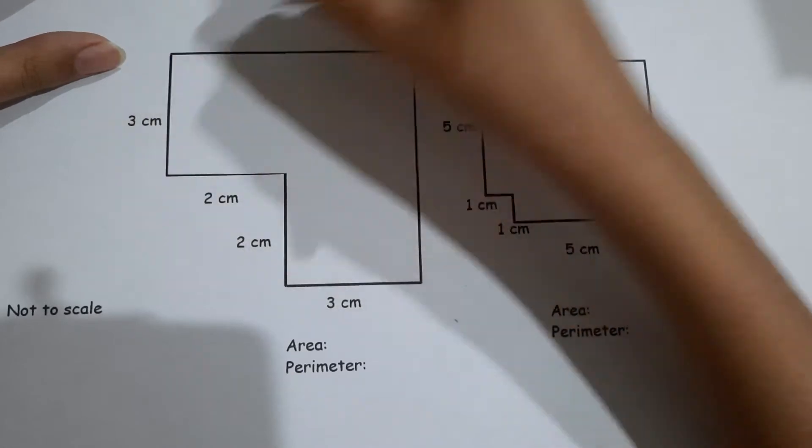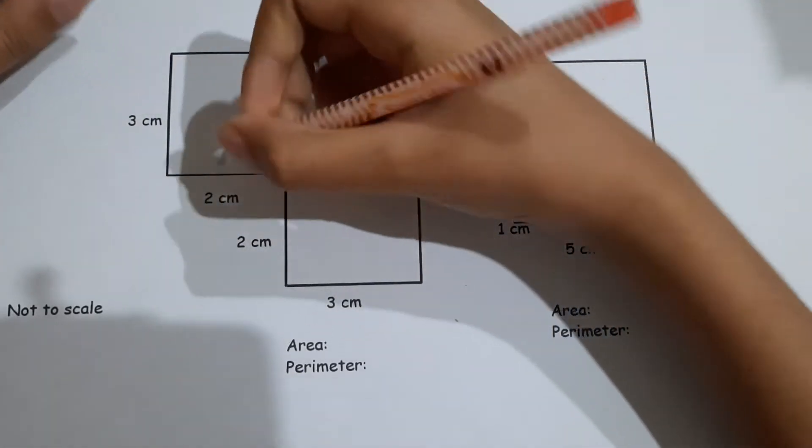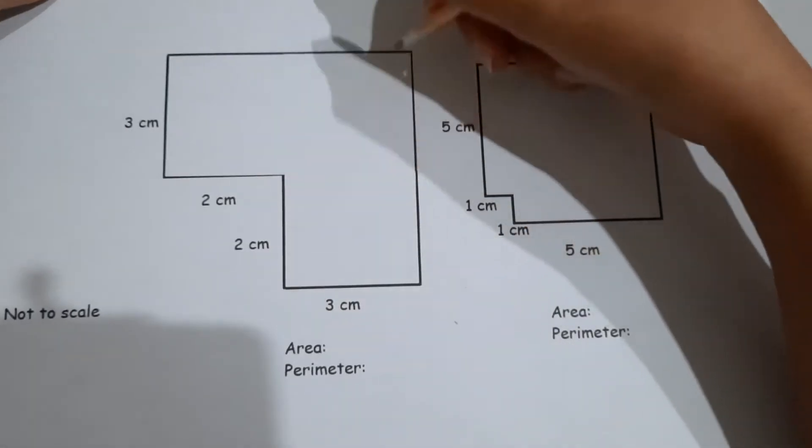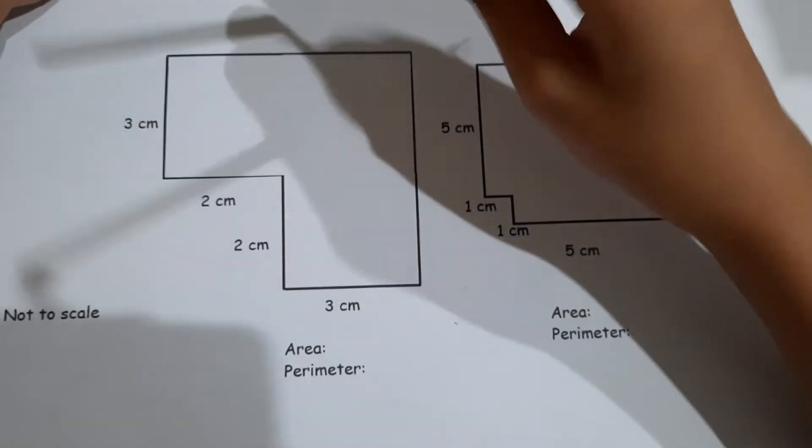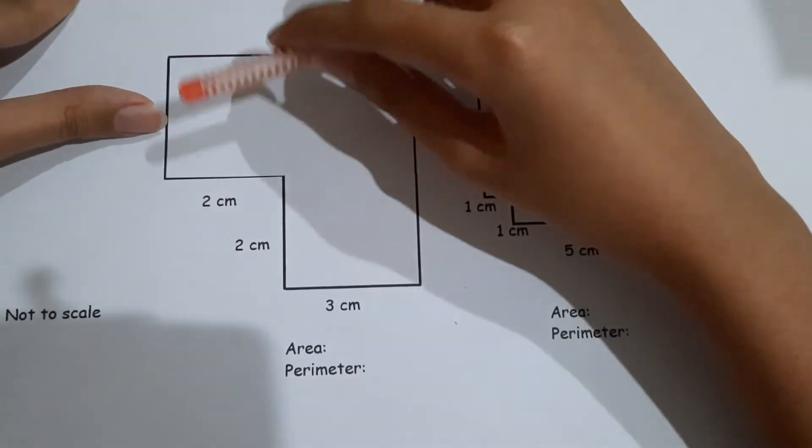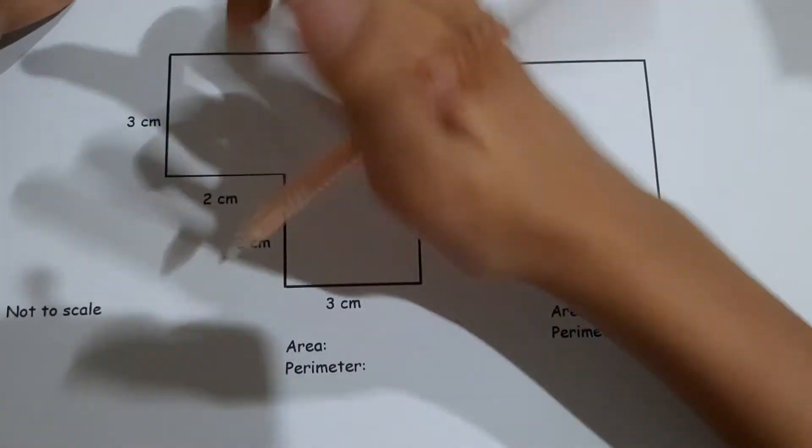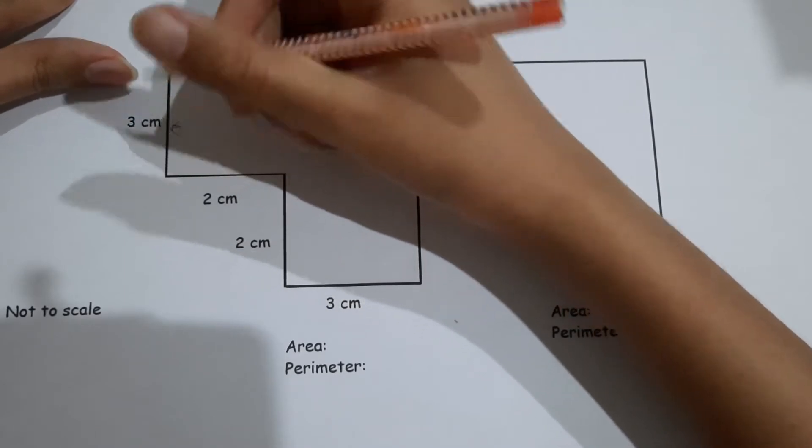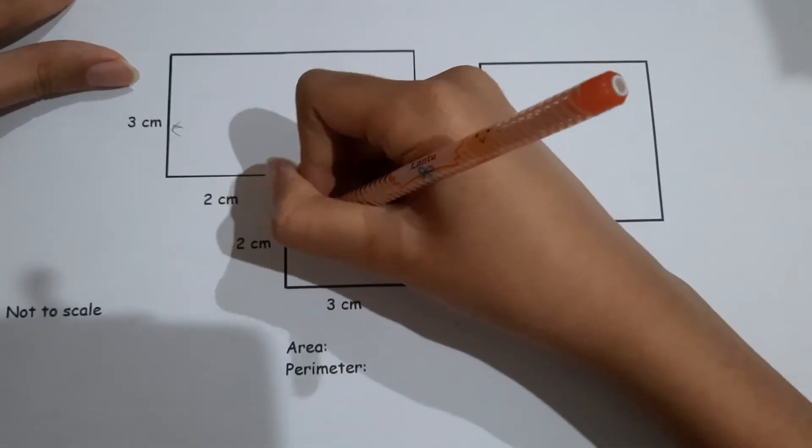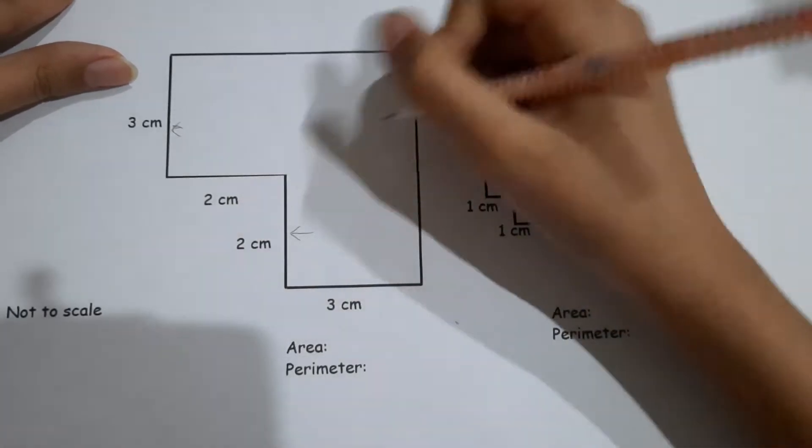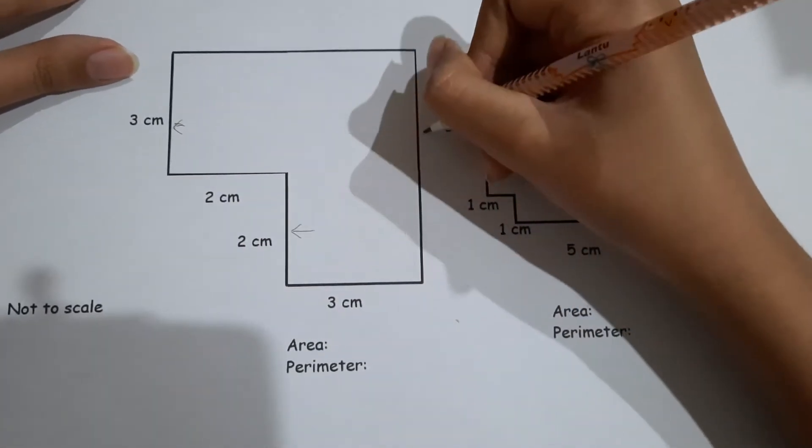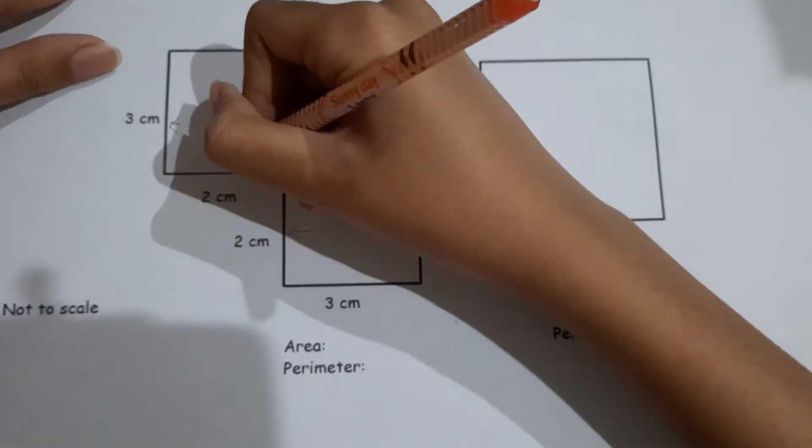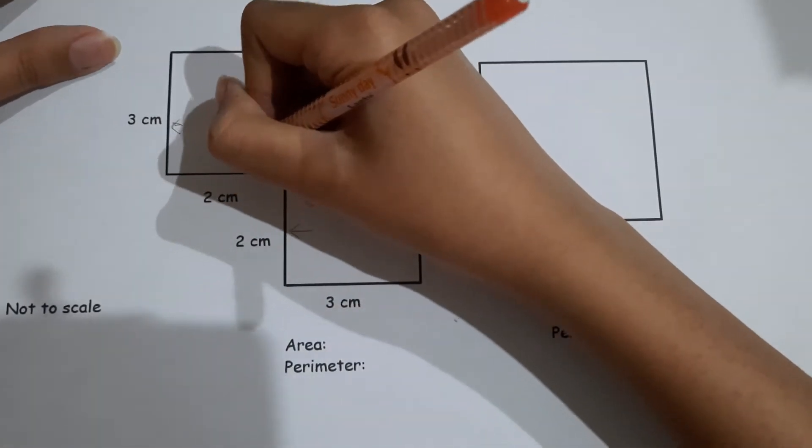You just need to add and find the missing ones using length. For example, three plus two - you need to add this and this to get this, so that would be five centimeters. And then since your values are the same, add again.